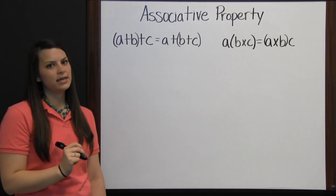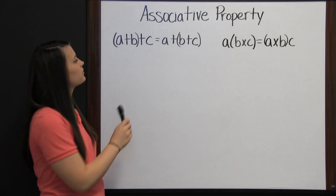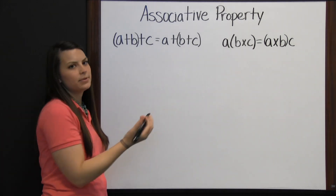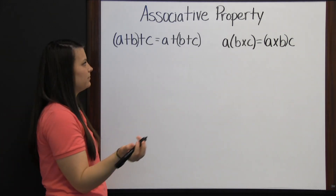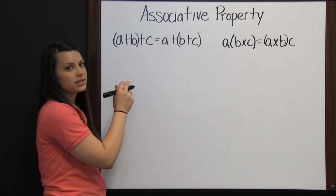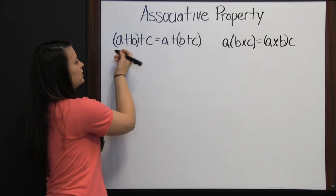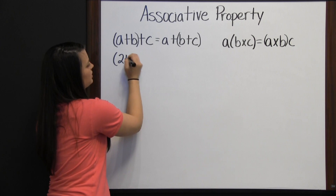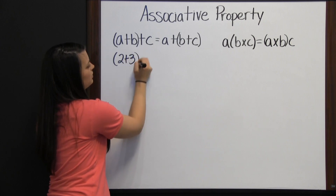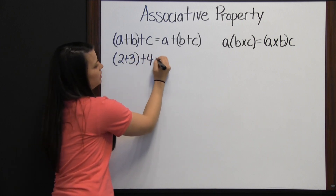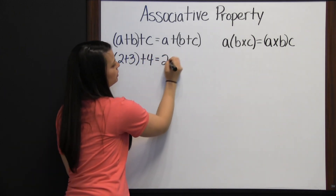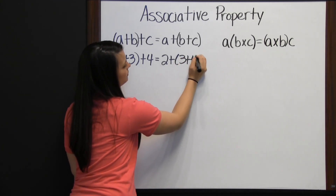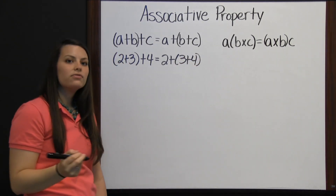Let's look at a couple of examples. A plus B plus C is equal to A plus B plus C. We're going to do what's in the parentheses first. Let's try this with 2 plus 3 plus 4 equals 2 plus 3 plus 4.